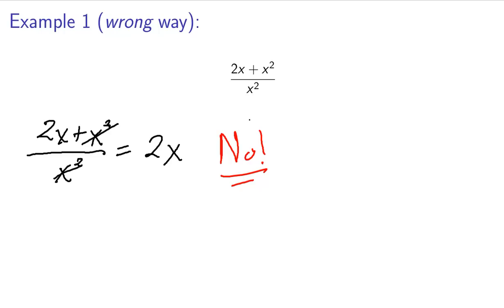See, what I did here is I had a term here. We're adding this x squared and so I decided to cancel that way. That's not the way you're supposed to do it.